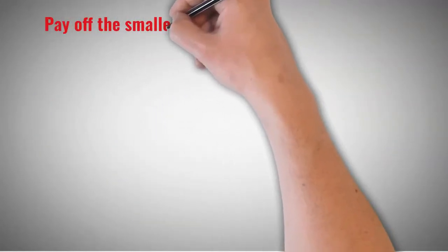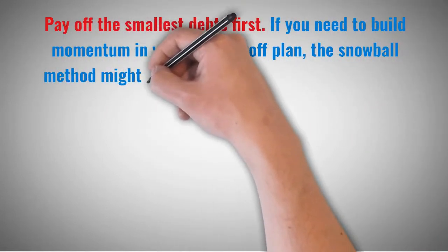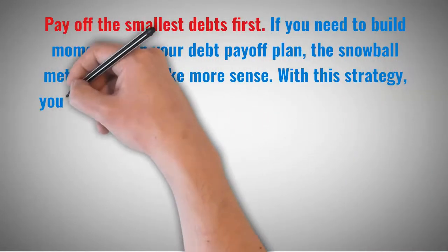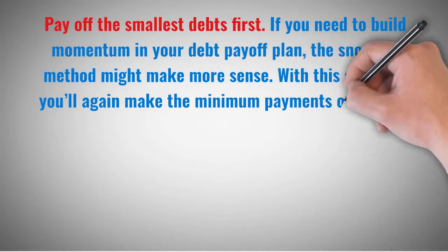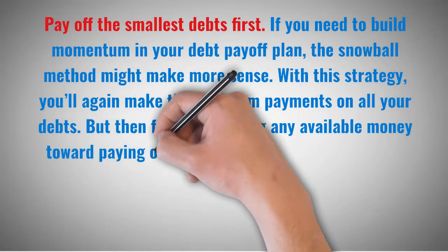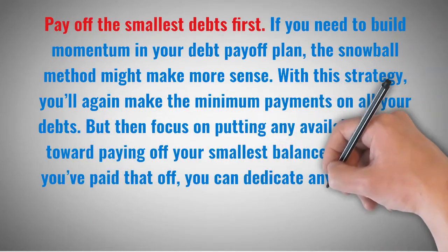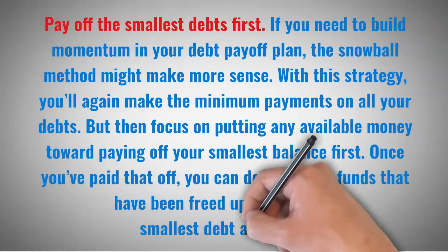Pay off the smallest debts first. If you need to build momentum in your debt payoff plan, the snowball method might make more sense. With this strategy, you'll again make the minimum payments on all your debts. But then focus on putting any available money toward paying off your smallest balance first. Once you've paid that off, you can dedicate any funds that have been freed up to your next smallest debt and so on.